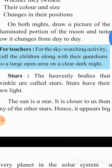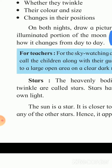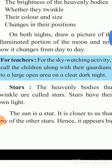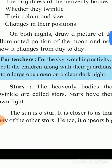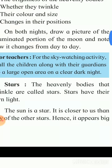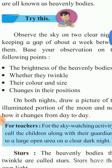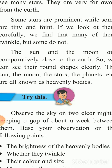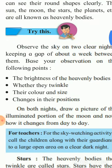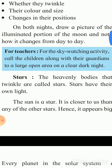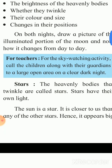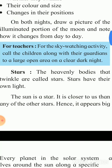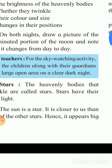Now, the heavenly bodies that twinkle are called stars. Stars are heavenly bodies that have their own light. The sun is a star. It is closer to us than any other star, and hence it appears bigger in size and brilliant.